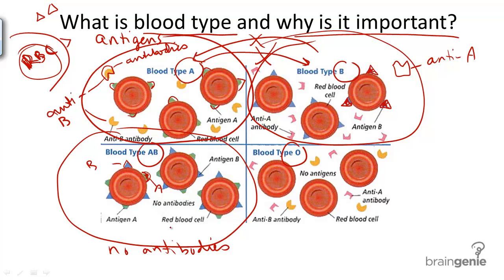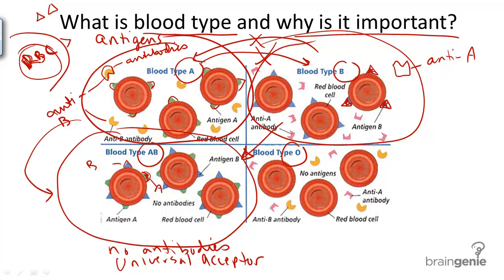So blood type AB is sometimes called the universal acceptor, because it can accept donations from blood type A, blood type B, and blood type O without any harm.